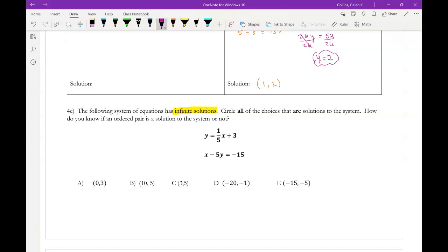So the way I would work through these is just check them, right? So like for choice A, if x is 0, y should be 3. So if I check that maybe using the top equation, 3 equals 1 fifth times 0 plus 3. Yeah, that checks out. If you check it in the bottom equation, it's like 0 minus 5 times 3 equals negative 15. That also checks out. So that is a solution to the system.